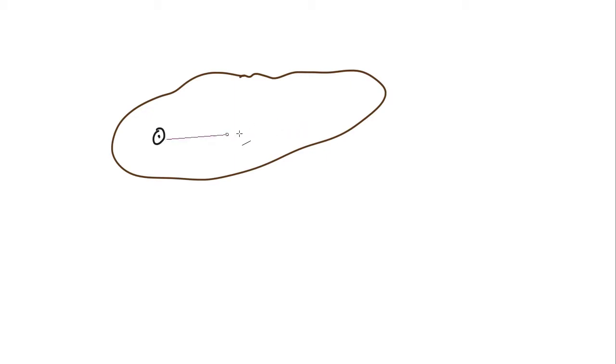How do you convert between the angle of rotation and the actual motion of some part of an object? Take a random-shaped object rotating about an axis — that circle with a dot means the axis is pointing out of the screen. If it rotates by some angle theta, the object starts at one position and ends up at another position, and that angle swept is theta.